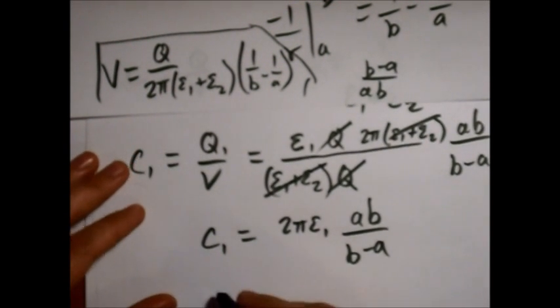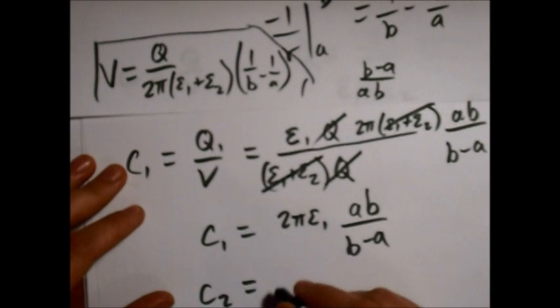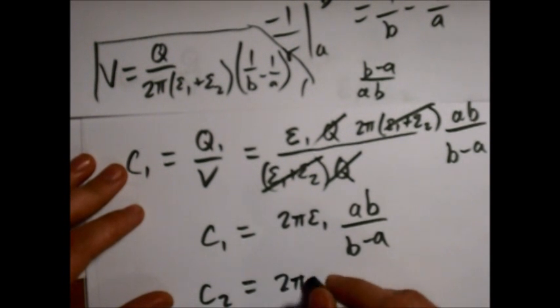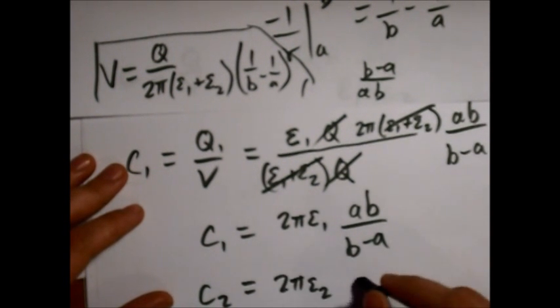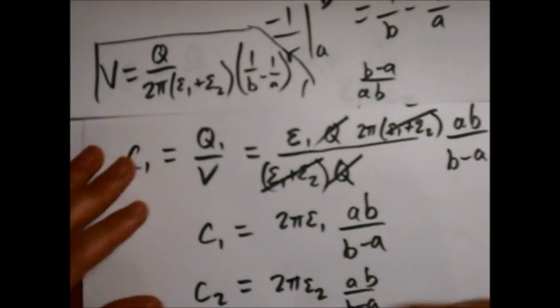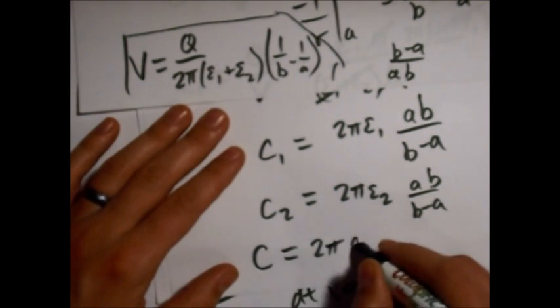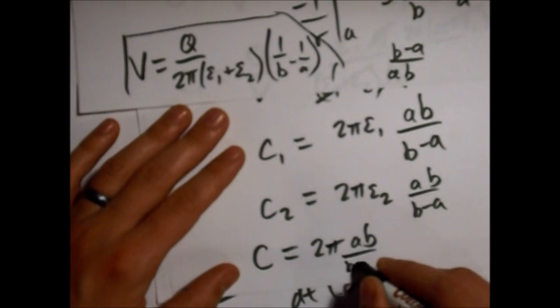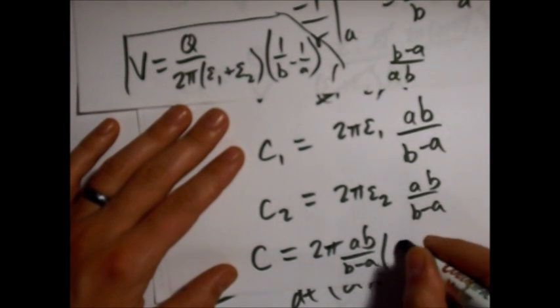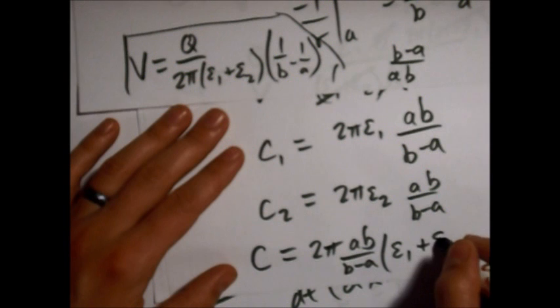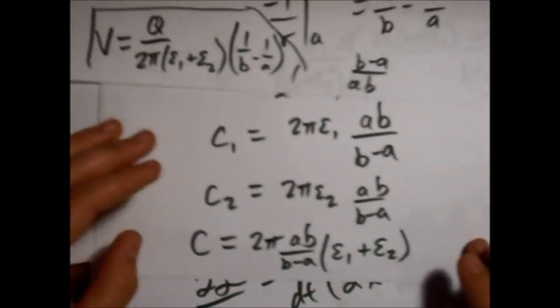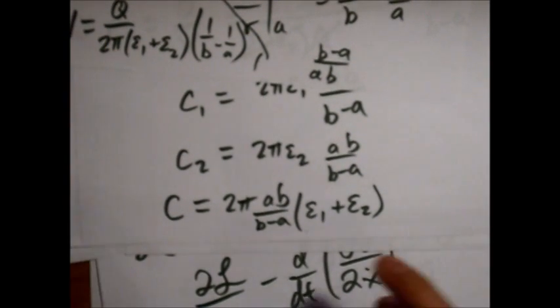All right. And c2 will be similar to 2 pi epsilon 2 this time. And then, when we just add these two, we get the total capacitance. Like that. So, here's the total capacitance of this capacitor.